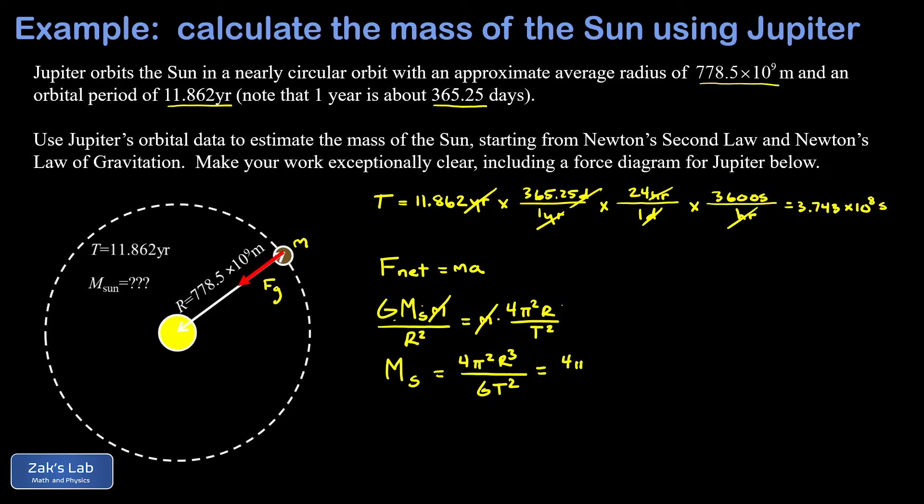So I get 4π² and then r was 778.5 times 10 to the ninth meters and I need to cube that. Big G for Newton's Law of Gravitation is 6.67 times 10 to the negative 11, and then our period written in seconds 3.743 times 10 to the eighth, and don't forget to square that. This gives me a result of 1.99 times 10 to the 30th kilograms.